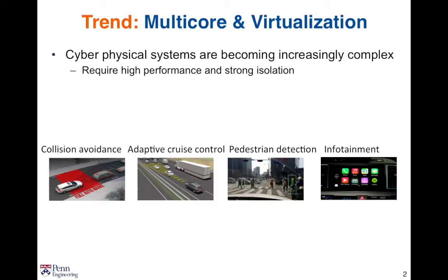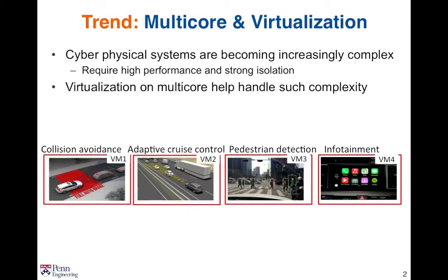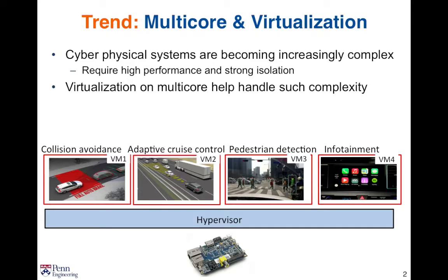As we know, several physical systems are becoming more and more complex. There are more and more components consolidated on the same platform. These components require high performance and strong isolation. The tasks in each component should not interfere with each other's timing properties. Multicore virtualization can help handle such complexity. For example, in automotive systems, we can consolidate the existing legacy systems into virtual machines on a more powerful multicore processor.